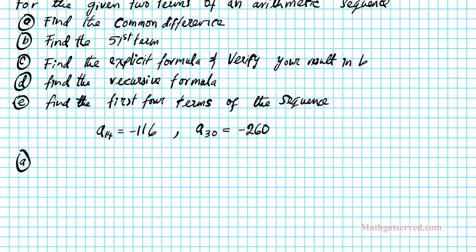Part A: we want to find the common difference. When we're working with arithmetic sequences, there is only one formula we have to work with: the nth term formula AN = A1 + (N - 1) × D. These two terms give us valuable information to set up some equations. For A14, N is equal to 14, so we can substitute into this equation.